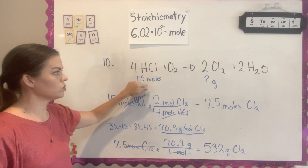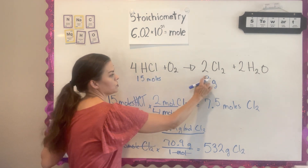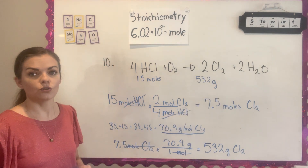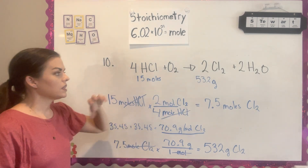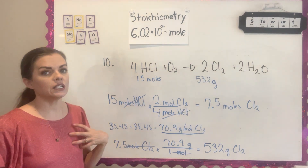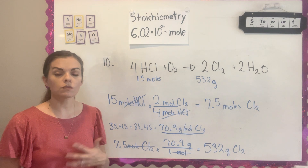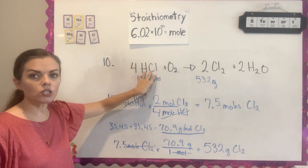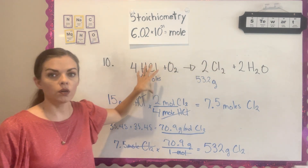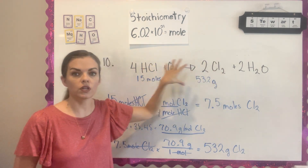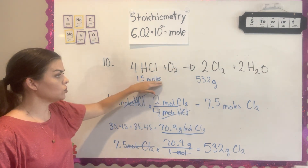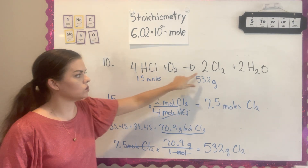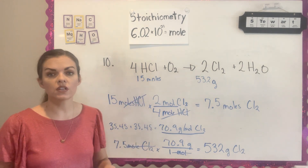So starting with 15 moles of HCl, it would produce 532 grams of Cl2. There are two steps to this problem, and as these problems get more complex, remember: when going from one compound in an equation to another, you must use moles. You cannot go directly from moles to grams between compounds — you have to convert between moles using the coefficients first.